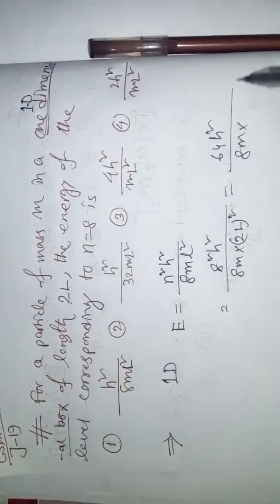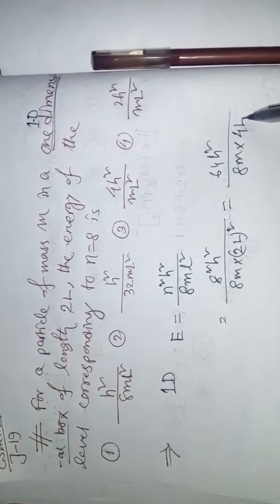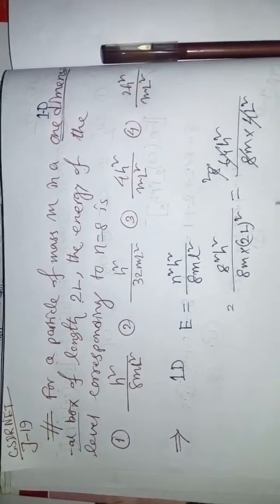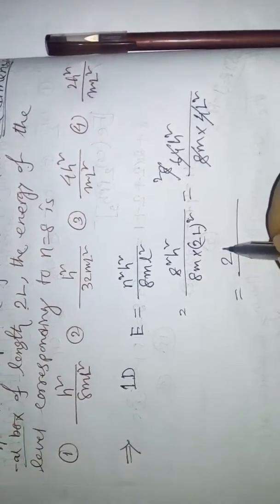Now you can cut this one, this one cancel, and it is just 64. After that, this one, this one, 2. Now this final, so the result is 2h square by m capital L square.